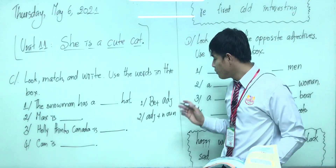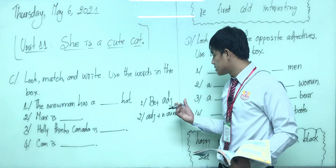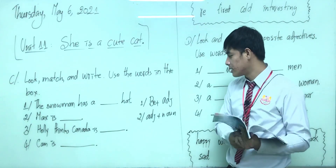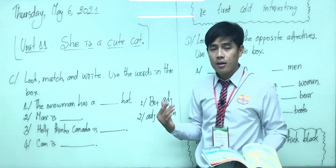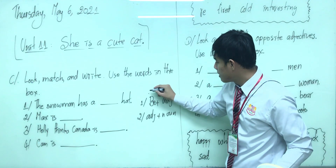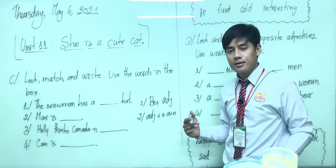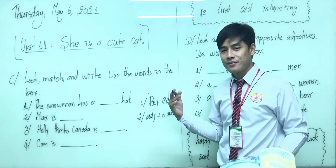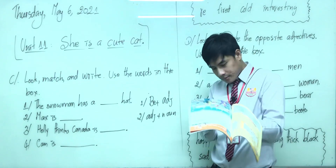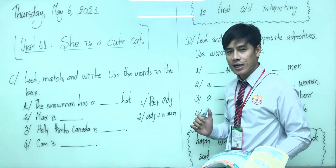Teacher believes you guys already know what an adjective and a noun are. An adjective is a word used to describe a noun. A noun is the name of things, people, places, ideas, or concepts. For example, 'be' plus an adjective like cute, bad, or good. And a noun is the name of a person, place, or animal — like 'dog' is the name of an animal, and 'Dara' is the name of a person.